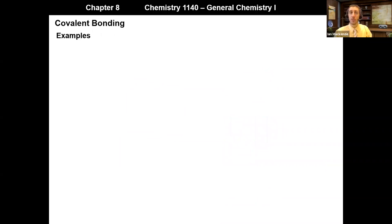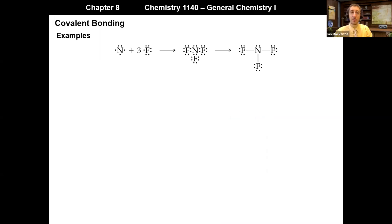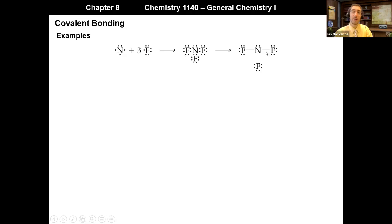Let's go through some examples. Starting with nitrogen and three fluorine atoms — a slightly more complex example. We simply pair up at open valence sites: nitrogen has three valence sites, fluorine has one. Bringing each fluorine atom and pairing it at an open site on nitrogen gives us this molecular Lewis structure. Each shared pair of electrons between atoms is then replaced with a line, giving us the more familiar-looking structure where lines between atoms represent two electrons being shared.